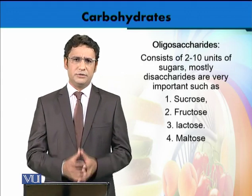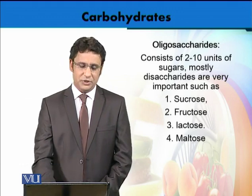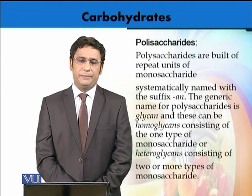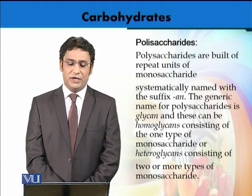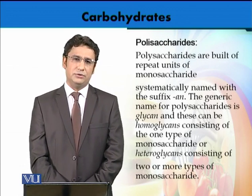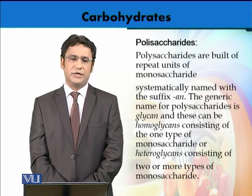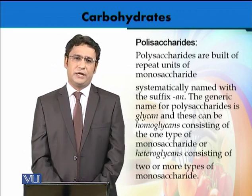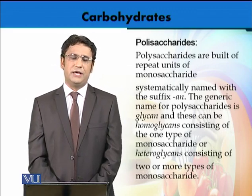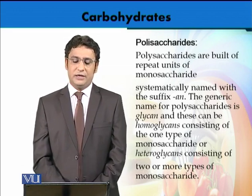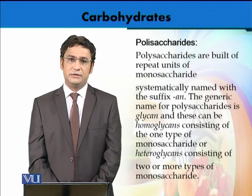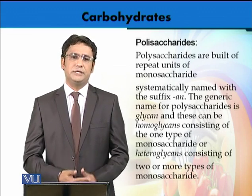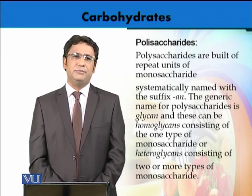Disaccharides consist of 2 units and are also part of the oligosaccharides; they could be even more complex structures. Then we have polysaccharides, which have more than 10 units of monosaccharides joined together. Polysaccharides always have a suffix '-an', so most of the polysaccharides are termed as glycans.